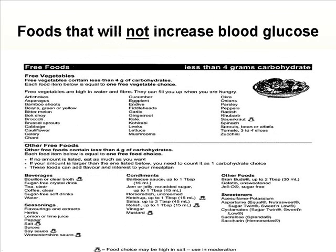Now let's look at foods that will not increase your blood glucose. We call these your free foods — the free vegetables. These contain a very small amount of carbohydrates that will not increase your sugar, and these vegetables are high in water and fiber and will fill you up when you're hungry. Some examples include artichokes, asparagus, bamboo shoots, green and yellow beans, bok choy, bitter melon, broccoli, Brussels sprouts, cabbage, cauliflower, celery, and chard.